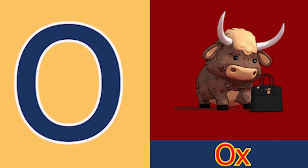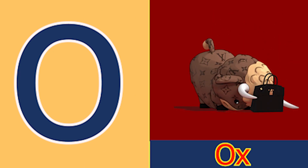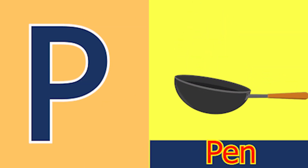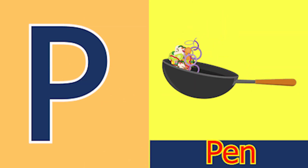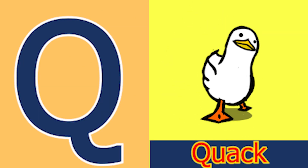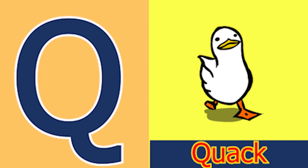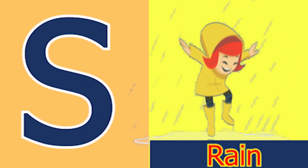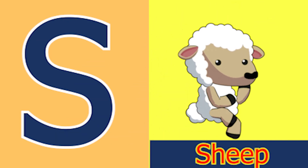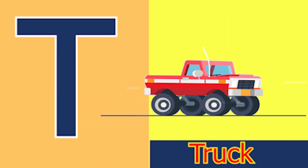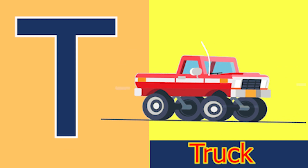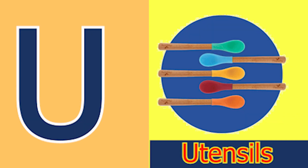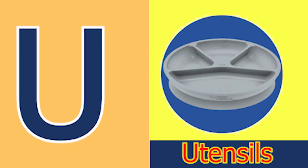O for ox and P for pan, Q for quack and R for rain, S for sheep and T for tub, U for utensil.